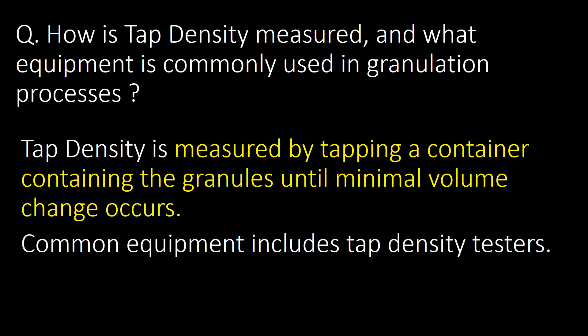How is tap density measured and what equipment is commonly used in granulation processes? Tap density is measured by tapping a container holding the granules until minimal volume change occurs. Common equipment used includes tap density testers.